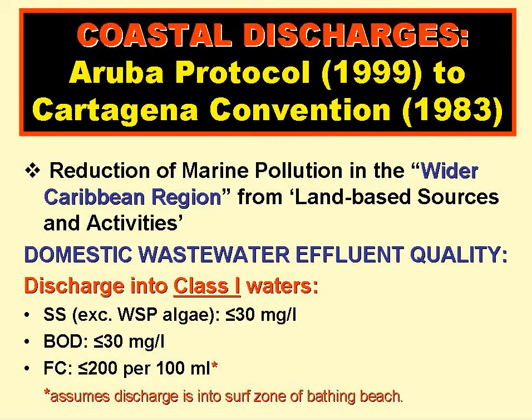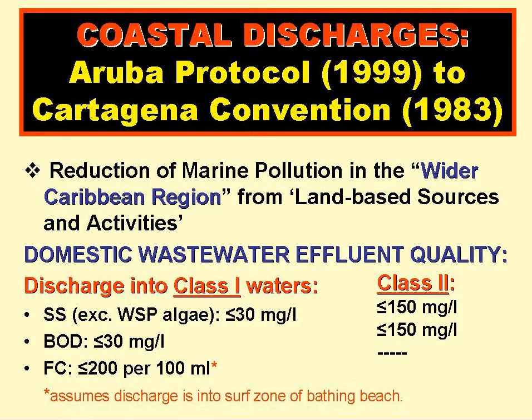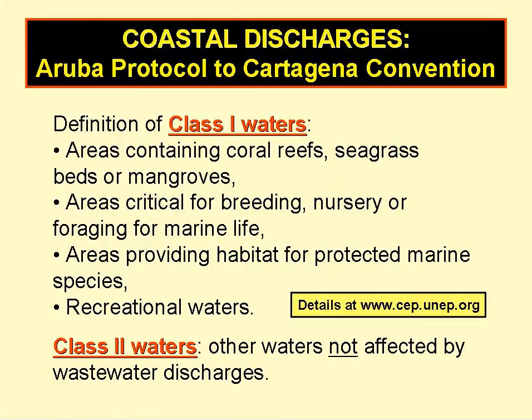Good examples of standards for coastal discharge are in the Aruba Protocol of the Cartagena Convention, which is basically a treaty signed by all states in and around the Caribbean. The Aruba Protocol seeks to reduce marine pollution from land-based activities, which basically means wastewater discharges to the sea. For discharges into class 1 waters — which are sensitive waters — the BOD and suspended solids both have to be no more than 30 milligrams per litre, and the faecal coliform count in the surf zone just off beaches has to be less than 200 per 100 ml. For discharge into class 2 waters, the only requirements are that the BOD and suspended solids both have to be no more than 150 milligrams per litre. Class 2 waters are essentially not affected by wastewater discharges.